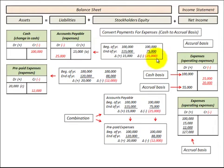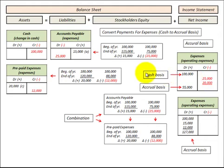In the example where we had a $25,000 reduction in accounts payable, we debit accounts payable or decrease it by $25,000, and the balancing entry is to credit or reduce our expenses by $25,000. Where we also had a $20,000 increase in prepaid expenses, we debit prepaid expenses for $20,000 and the balancing entry is to credit or reduce our expenses by $20,000.